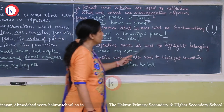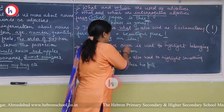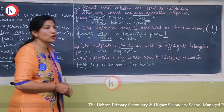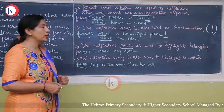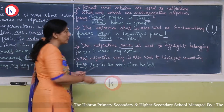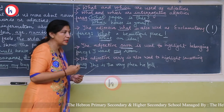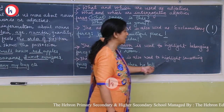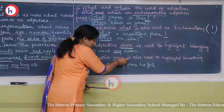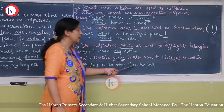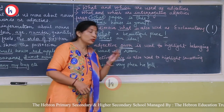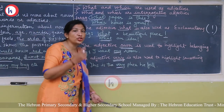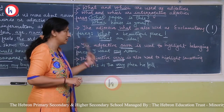The adjective 'own' is used to highlight belonging. In the last chapter, we already studied the possessive pronoun — that which belongs to us, that shows our belonging. For example, 'I want my own room.' The adjective 'very' is also used to highlight something. For example, 'This is the very place he fell' — it shows that exact place. 'Very place' means that specific place.